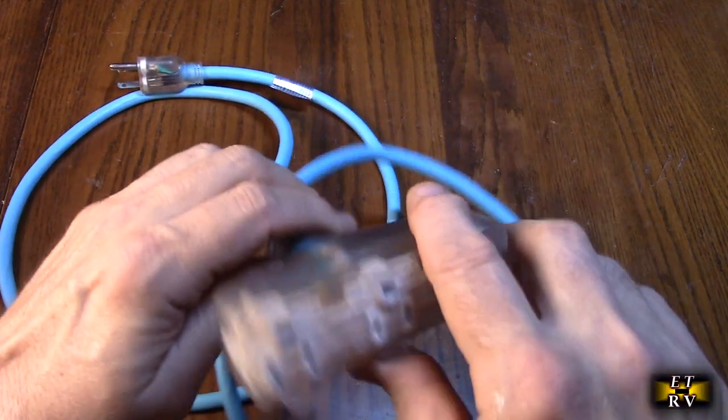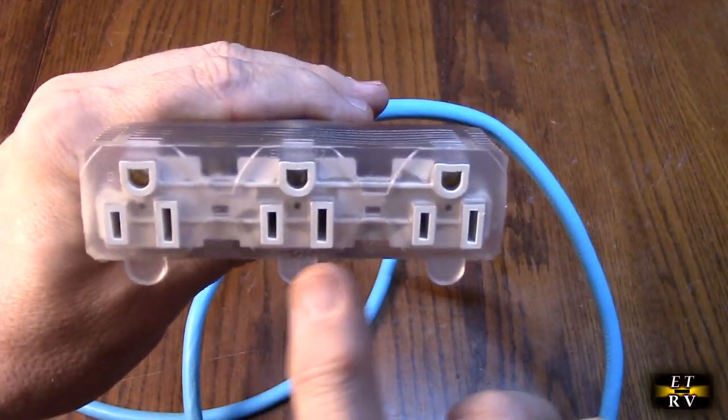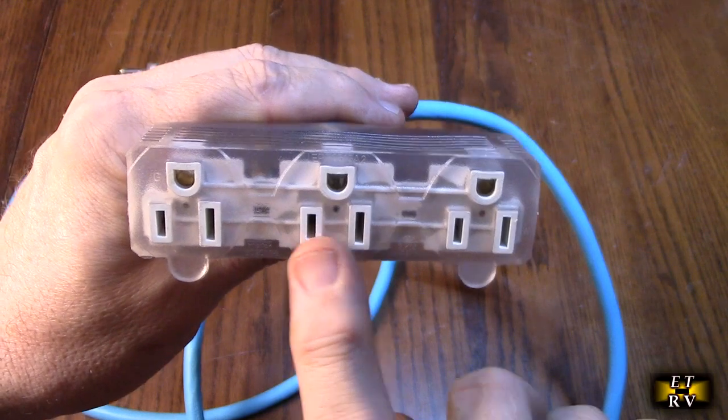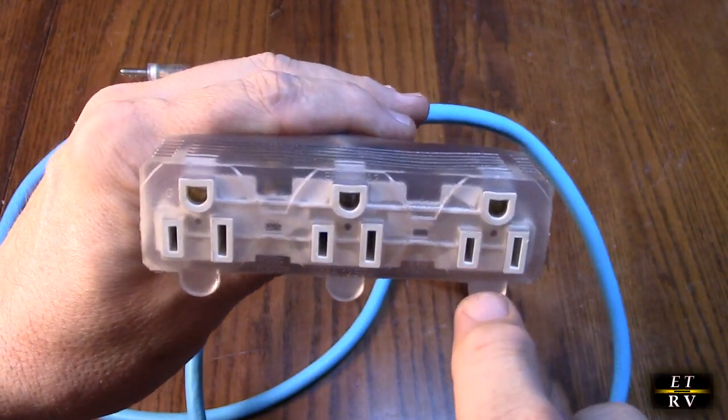Let's take a look at the front right here. It's got the typical hot, neutral, ground right there. It's got a tab to prevent you from putting it in backwards because the ground won't allow you to. That's really smart.